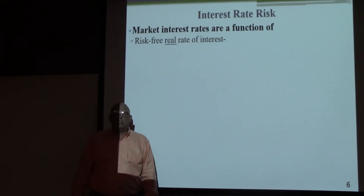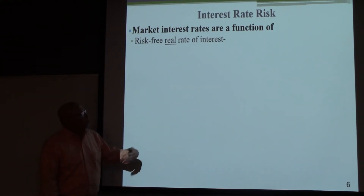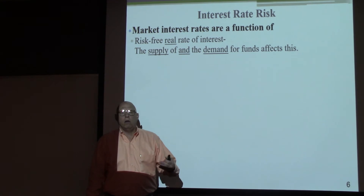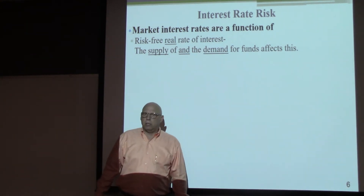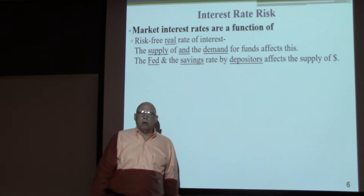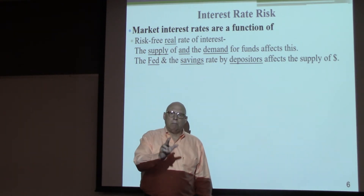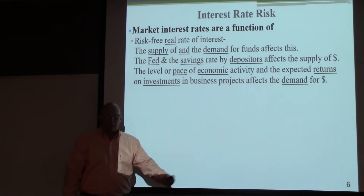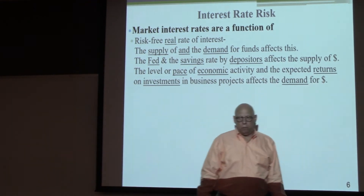Market rates are a function of the components of interest rates. There's the real risk-free rate of interest, which is a function of the supply and demand for funds. The supply is controlled by the Fed and the savings rate of depositors — if people save more, they deposit more, increasing the money supply. The demand is controlled by businesses, the economy, and government borrowers. The higher the return a business expects, the more they will borrow.